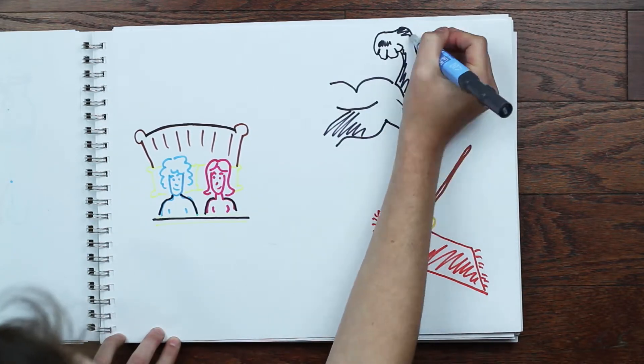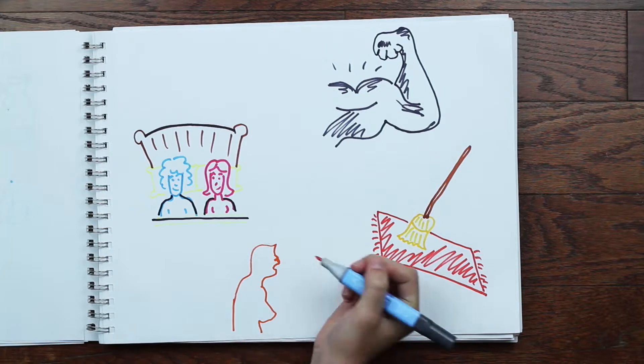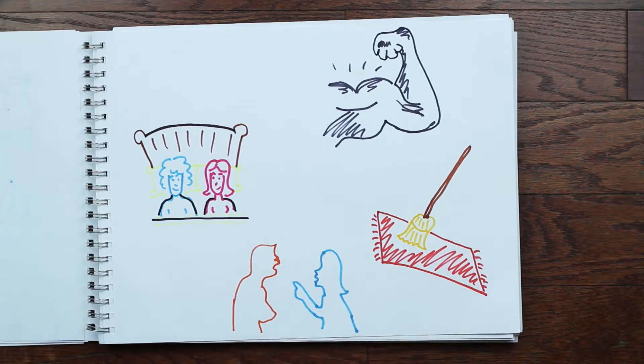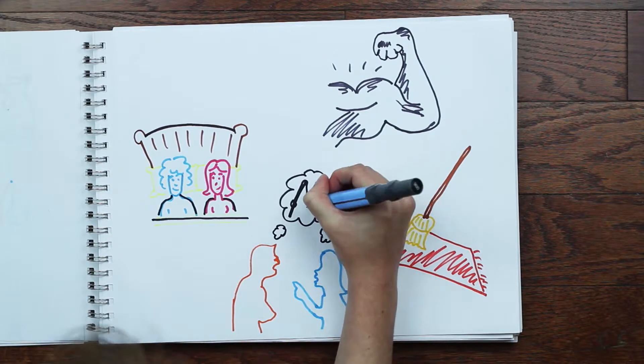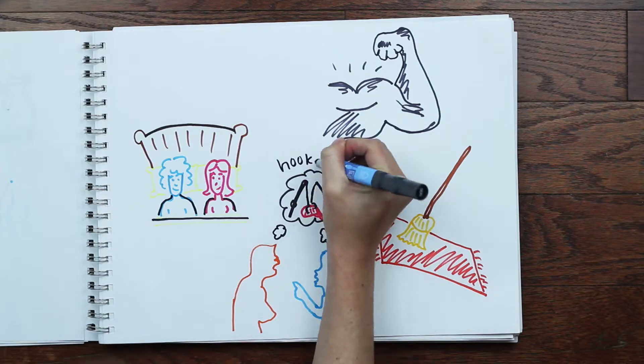You know those couples who are clearly no good for each other, and can't work through their issues, but also can't seem to call it quits? Their brains could just be hooked on each other.